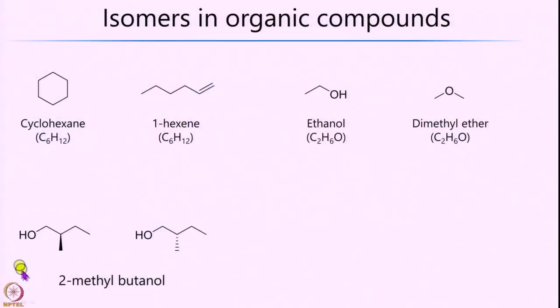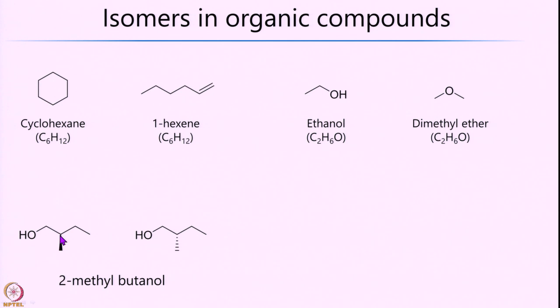One more example of isomers in organic chemistry is 2-methyl butanol, where the only difference is in the way the carbon is arranged — the CH3 group on the second carbon either comes out of the plane or goes behind the plane. Before we look at the classification of isomers, you might be wondering why we study these, as they look very simple and naive. Is there any consequence or application?